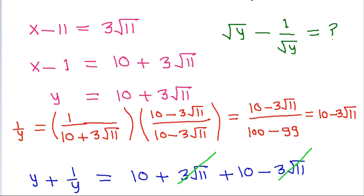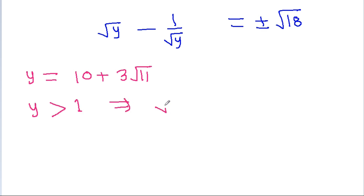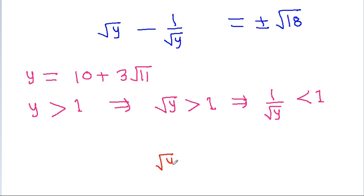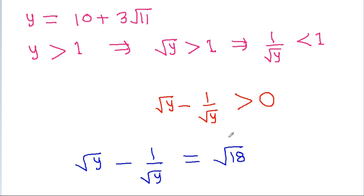We have y equal to 10 plus 3 root 11, so y is greater than 1, which implies root y is greater than 1, and 1 by root y is less than 1. Since root y is greater than 1 and 1 by root y is less than 1, root y minus 1 by root y is greater than 0. Therefore, root y minus 1 by root y cannot be equal to negative root 18, so the answer is root y minus 1 by root y equals positive root 18.